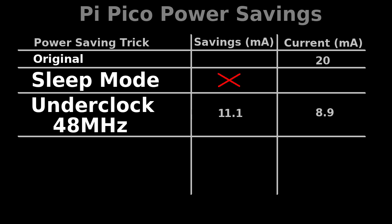So we're now consuming only 8.9 milliamps. If we reduce the voltage to 0.90 volts, down from the default 1.10, we can further reduce the current to 7.4 milliamps. By the way, if you're aware of any more tricks to reduce the Pico's consumption even further, please let me know in the comments.